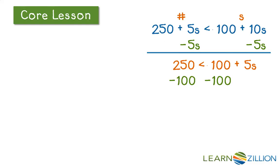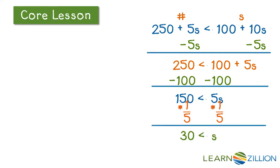We need to subtract 100 from both sides. Then we are left with 150 < 5s. To get s by itself, we multiply both sides by 1/5 because 1/5 is the multiplicative inverse of 5. We get 30 < s.